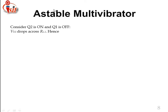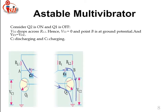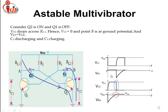The condition is then reversed: Q2 is ON and Q1 is OFF. VCC drops across RL2, hence VC2 is 0. For Q1 ON, RL1 drops and VC1 equals 0. The total condition is opposite: point B is at ground potential, VC1 equals VCC, C2 is discharging and C1 is charging. This is the diagrammatic representation — VC2 and VB2 are both dropped out.